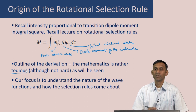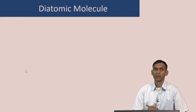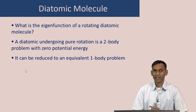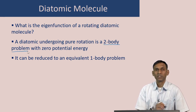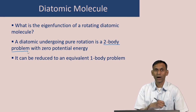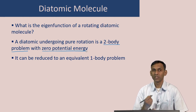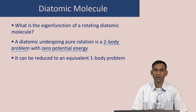We consider the simplest rotating chemical system, namely a rotating diatomic molecule. The question then is: what are the eigenfunctions of a rotating diatomic molecule? We have to keep in mind that a diatomic undergoing pure rotation is a two-body problem which is in motion but has zero potential energy. So the only energy of these two bodies is the kinetic energy of rotation.